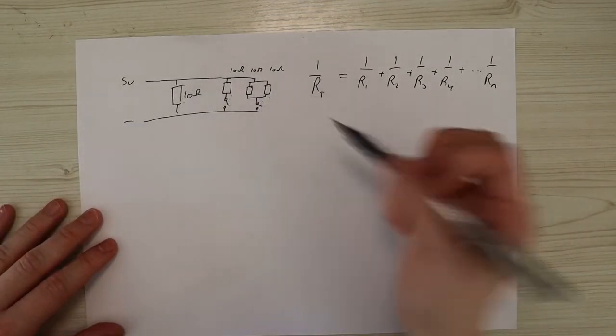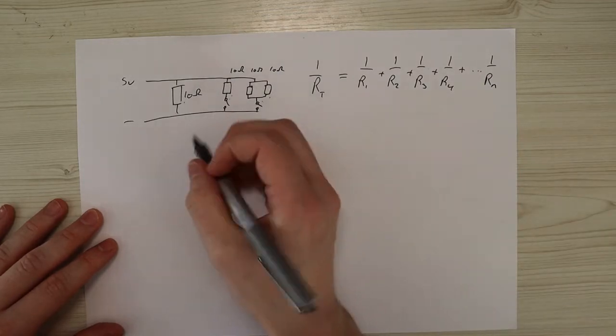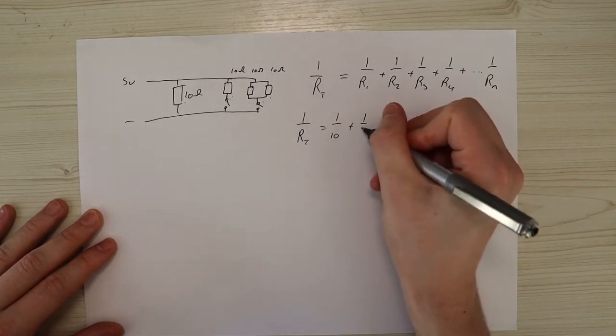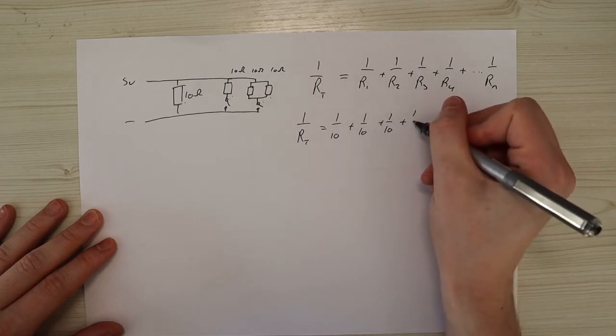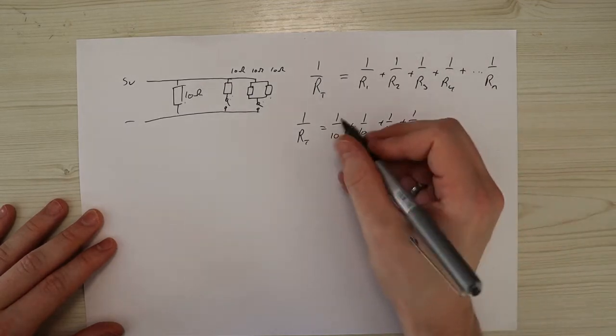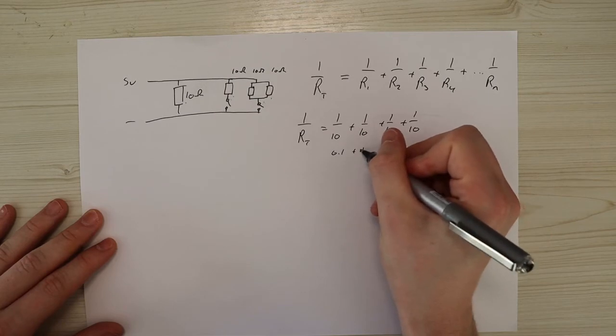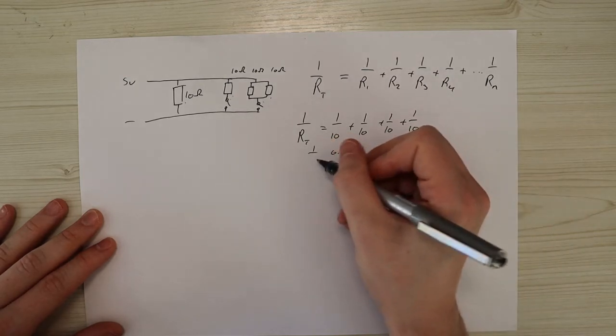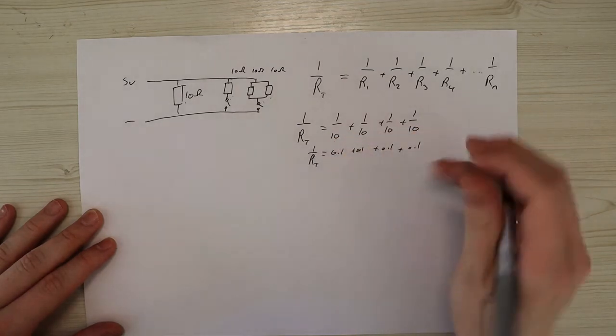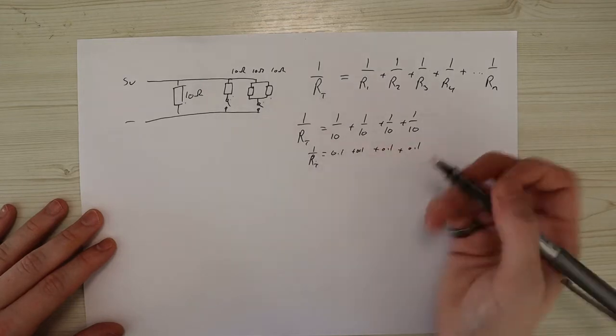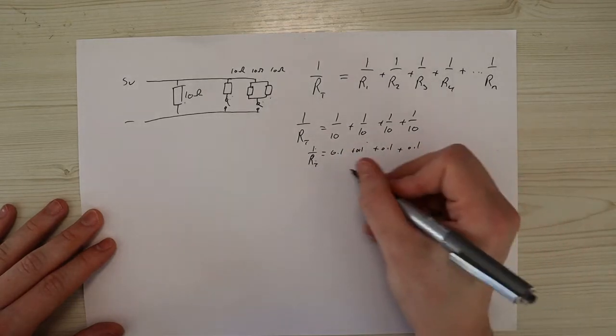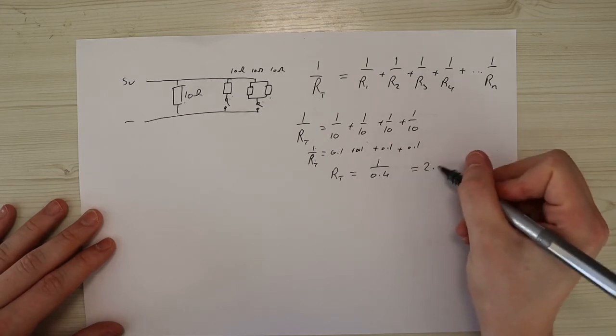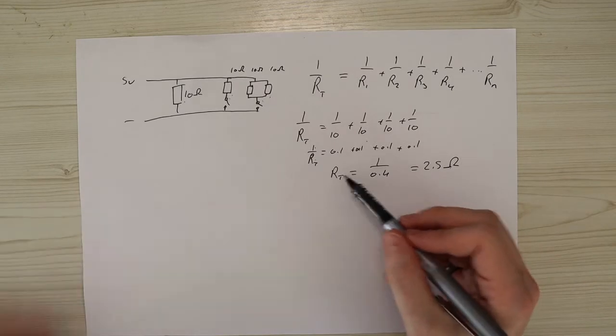So in this example, they're all 10 ohms, which makes it quite simple to work out. You don't need a calculator for this. So one over resistor T equals one over 10. Plus one over 10. Plus one over 10. Plus one over 10. And then from this, that's obviously 0.1 plus 0.1 plus 0.1 plus 0.1 equals one over Rt. And now we just need to get the resistor. So we're just going to put the one over there and simple equation. So resistor T equals one over 0.4, which equals 2.5 ohms. So that's our total resistance when we've got all of them on.